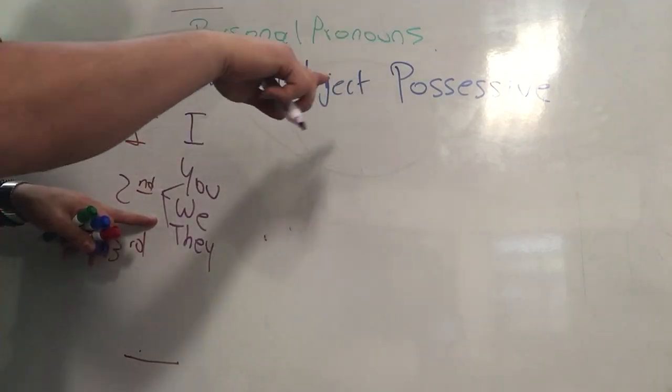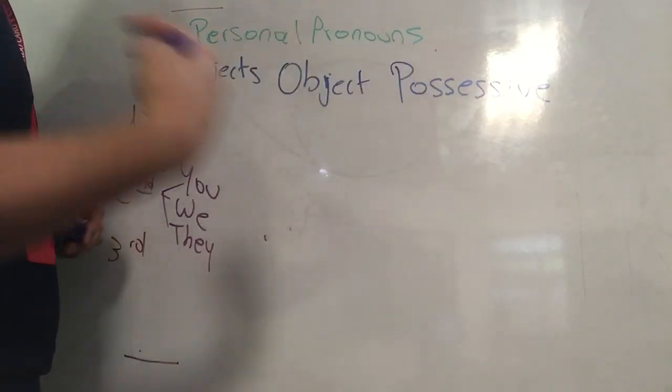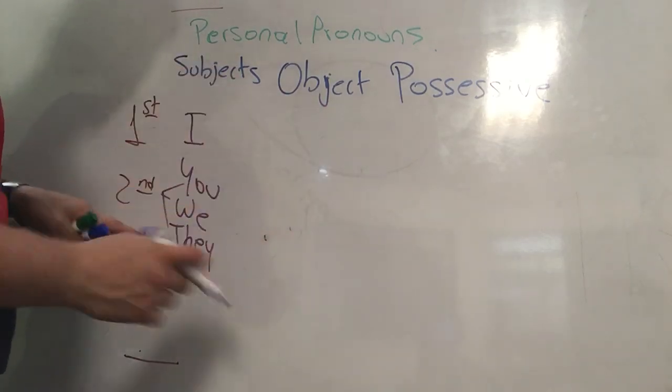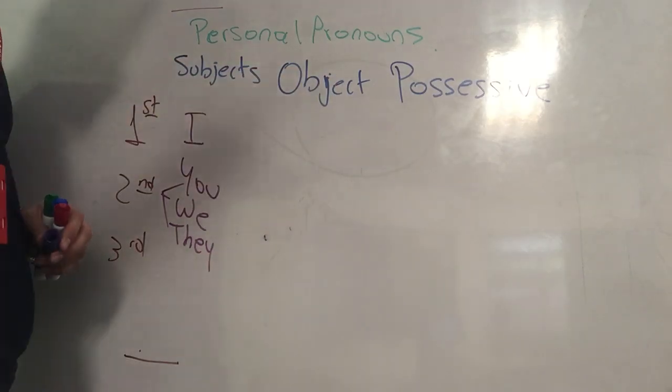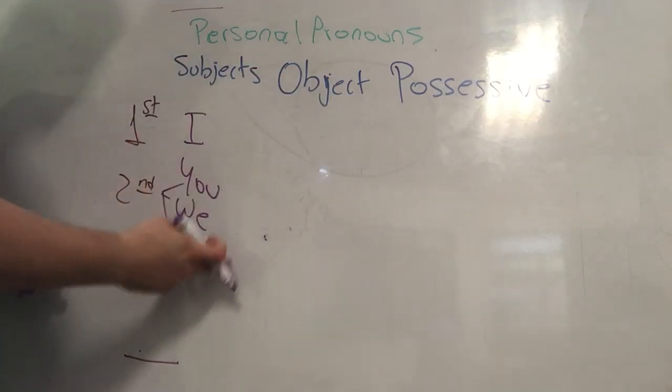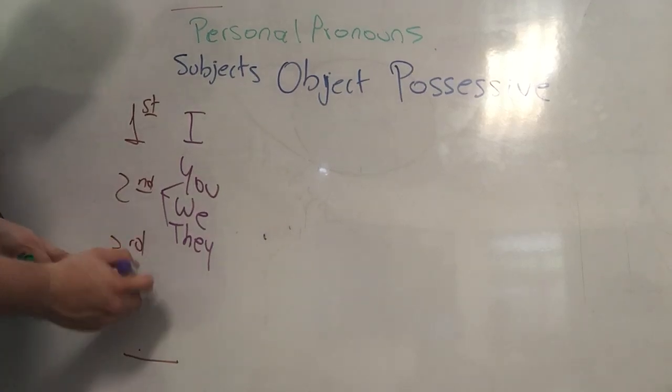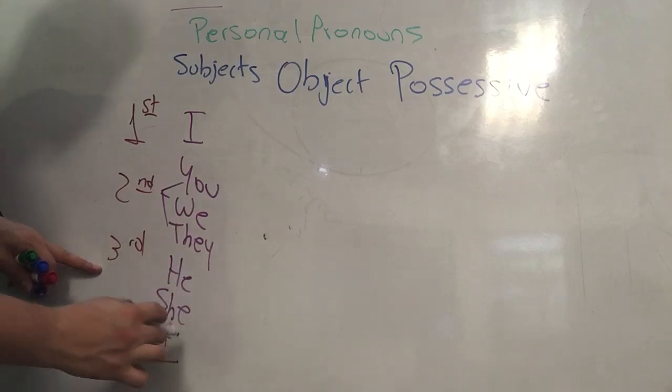We, that is you and myself included in one group. For example, we are a big group. And they, it is not you, it is not me, it is some other kind of people. Now, we have at the end the third person: he, she, and it.